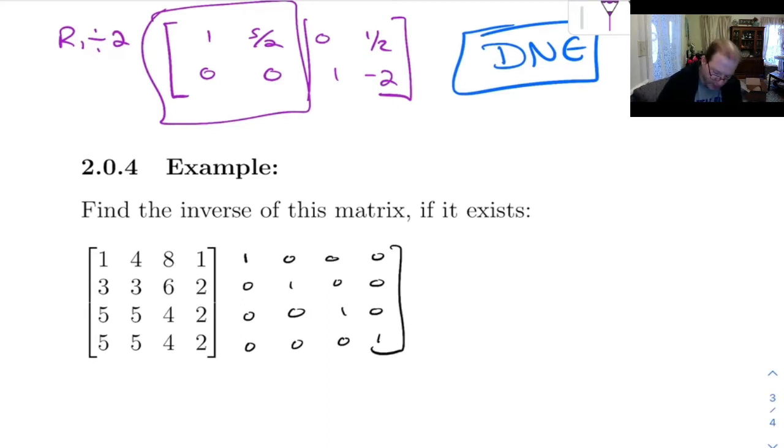Now I could start off and use the 1 up here as a pivot, but if you look at this matrix, notice something here.